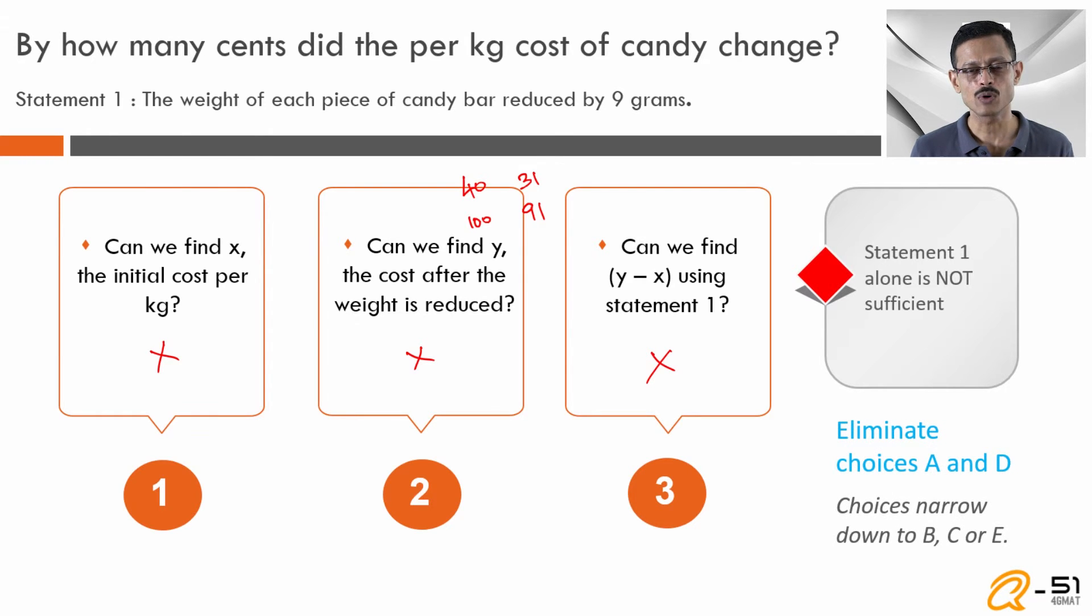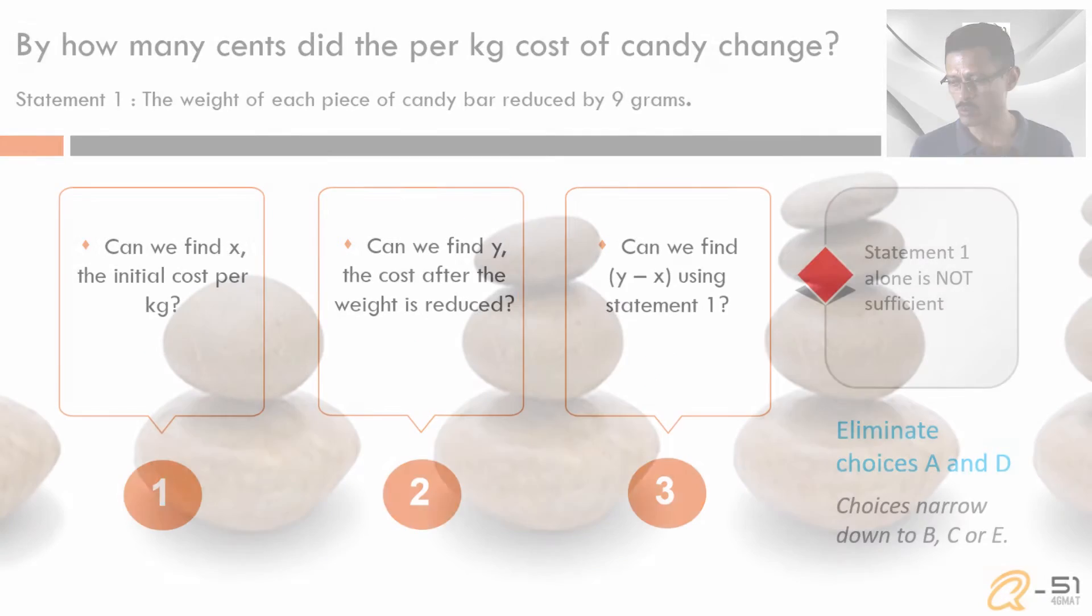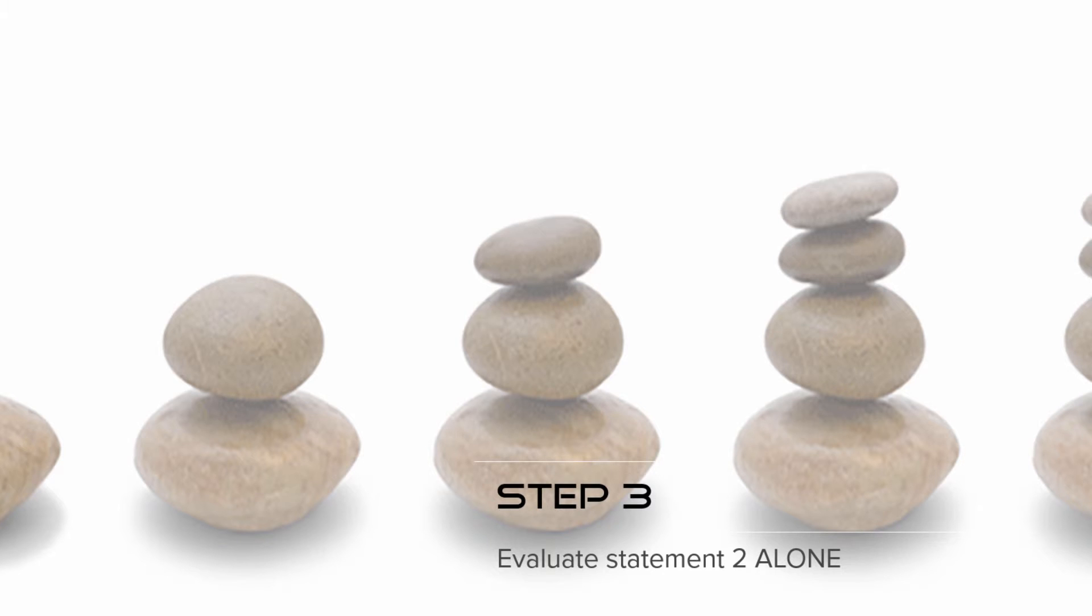Statement 1 is not sufficient. We rule out choices A and D. What we are left with is choices B, C, or E. Step 3: we are going to look at statement 2 alone and see if we are able to get an answer to this question.